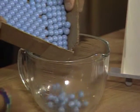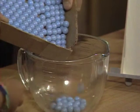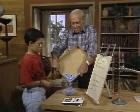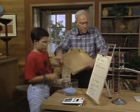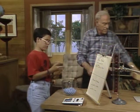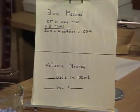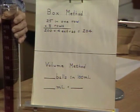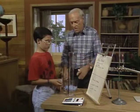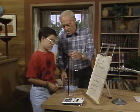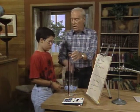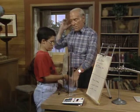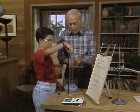Notice what the next one is? It's the volume method. We'll put the blank balls in 100 milliliters — since that's 100, it goes up to 1,000. So let's find out how many balls make a volume of 100.